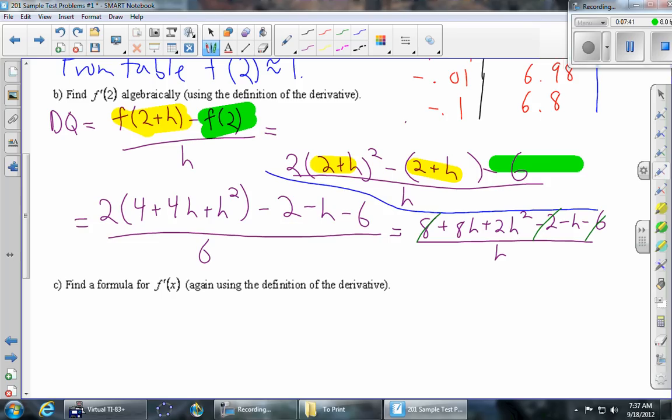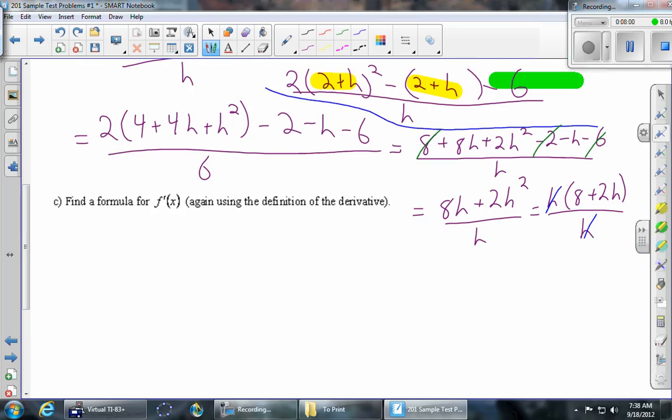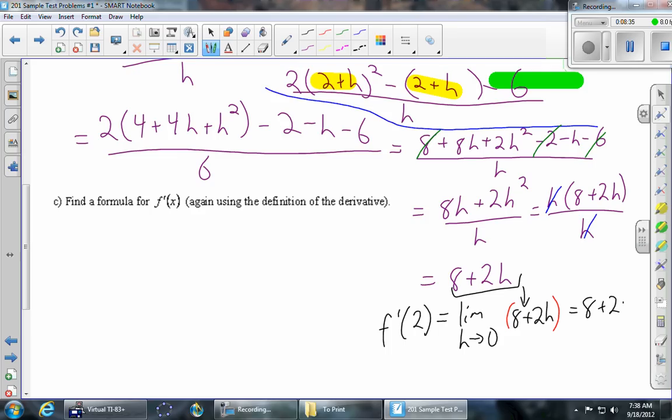And then the nice thing is that the only terms that are left all have h in them, which means we can factor h out of both. And then the most satisfying part of this problem is that canceling the h in the bottom. So the difference quotient turns out to be simplified to 8 + 2h. So then if we wanted to bring it home, f'(2), which is the limit as h approaches 0 of the difference quotient, well here's the difference quotient, 8 + 2h. And then we just plug in h = 0, so we get 8 + 2(0), which is just 8.